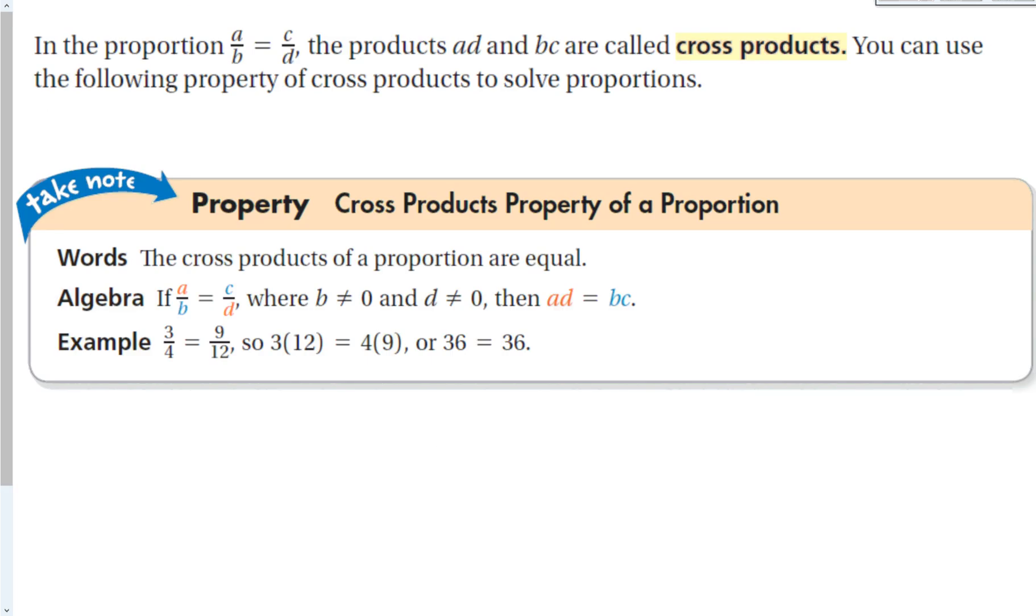We have another property which is used much more in proportions. And you've probably heard of this one before. In the proportion A over B is equal to C over D, the products AD, A times D, and BC, B times C, are called cross products. Notice that they are across from each other.